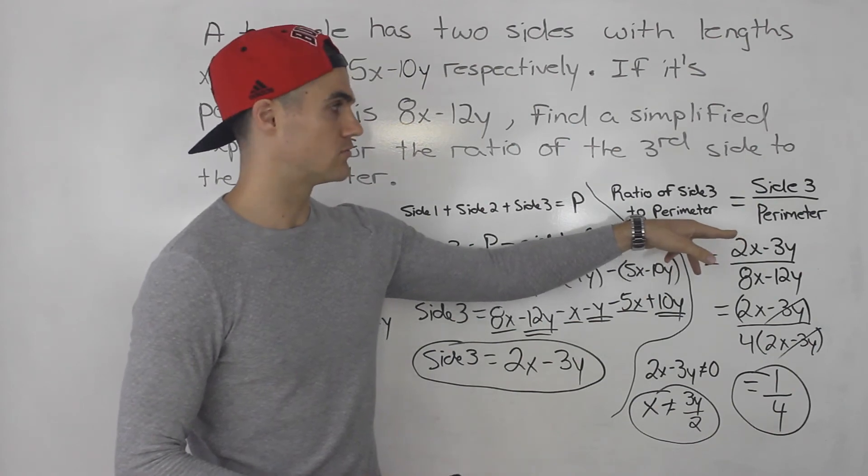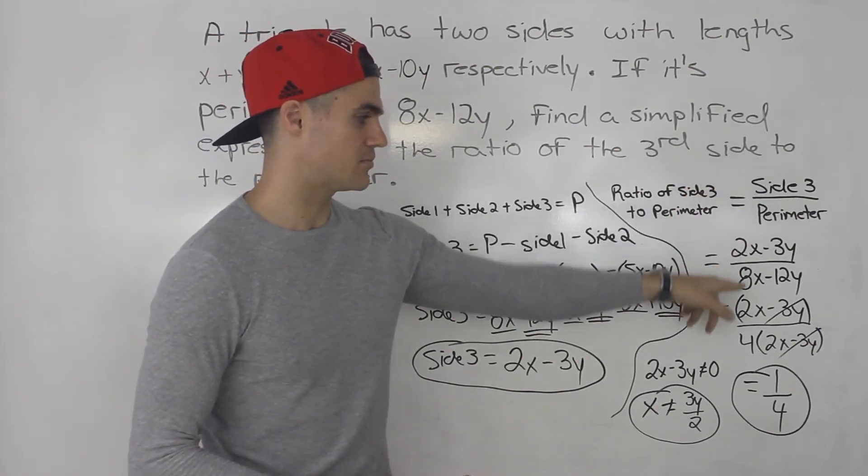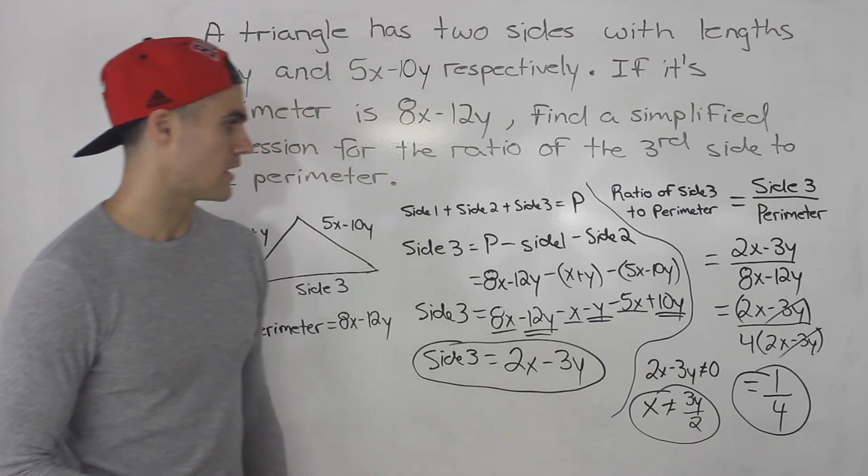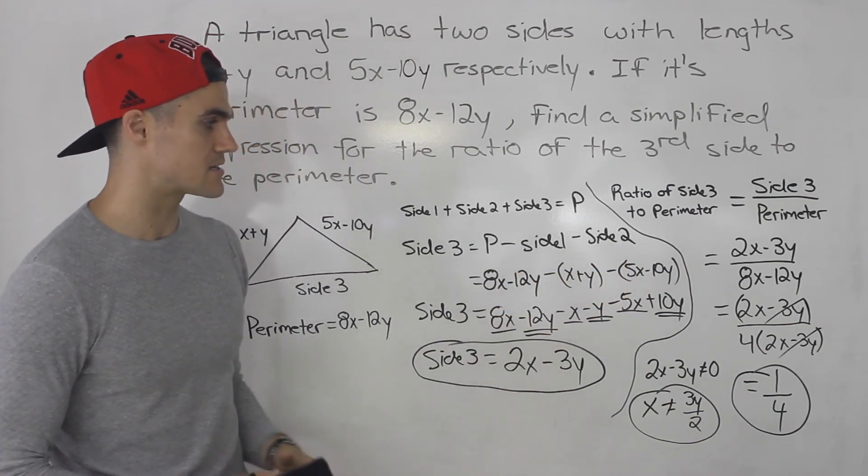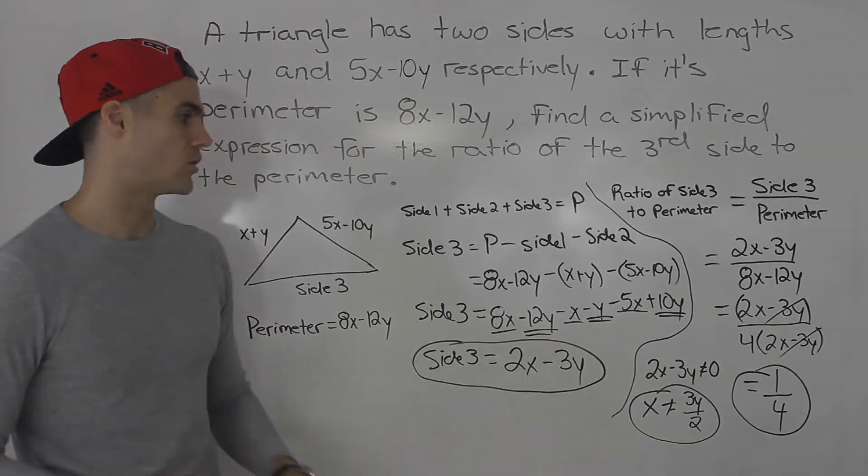That's the ratio of the third side to the perimeter. Simplify, you get 1 over 4. And don't forget these brackets here. When you're subtracting the sides, you've got to put the sides in brackets because you're subtracting that whole side.